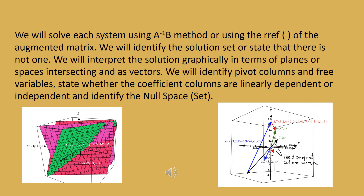In this video, we will go over the concepts from part one with some examples. We will go through all the information a system of equations provides. For each example, we will solve the system using the A inverse B method or the RREF method. We will identify the solution set, interpret the solution graphically in terms of planes or spaces intersecting and as vectors, identify the pivot columns, the free variables, state whether the coefficient columns are linearly dependent or independent, and identify the null space.